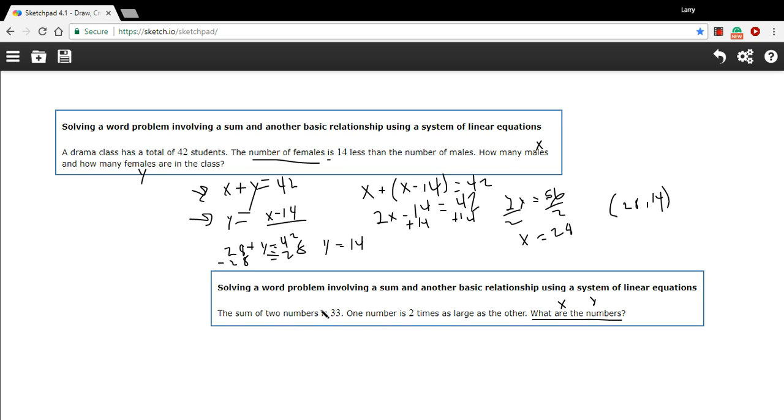And then I just need to write two equations using these facts. The first fact is the sum of those two things is 33. So that's not too tough. That's x plus y equals 33. And then it says one number is two times as large as the other. So I can say x is two times as large as y. And that would just be x equals two times y.